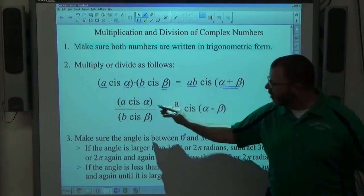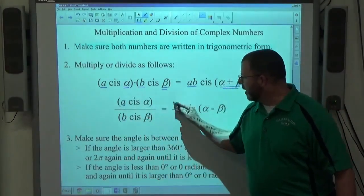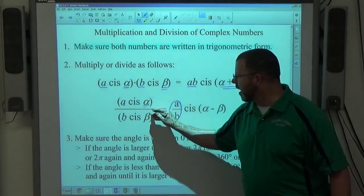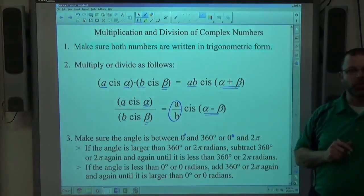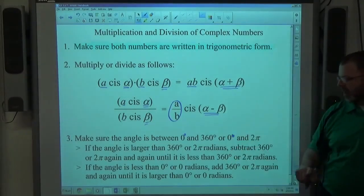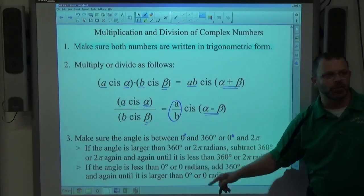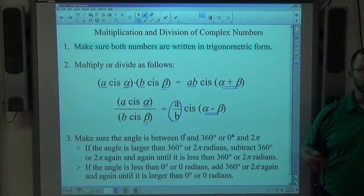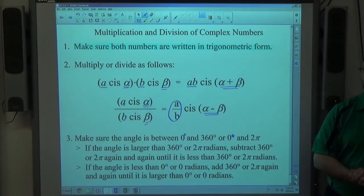On division, you're going to divide the magnitudes to get the new magnitude, and you're going to subtract the top minus the bottom angle to get the new angle. When you start subtracting, you have the possibility of getting a negative angle. If the angle's less than 0 degrees or 0 radians, you add 360 or 2π again and again until it gets to be a positive number.